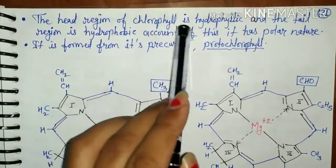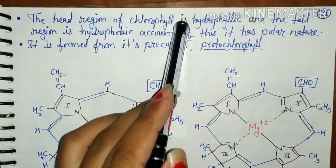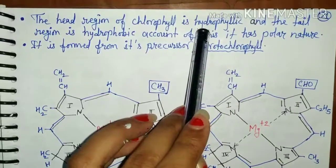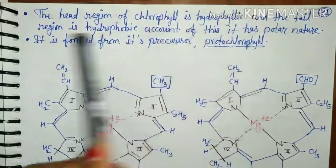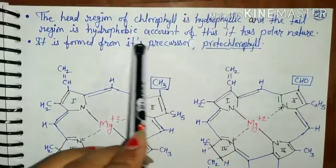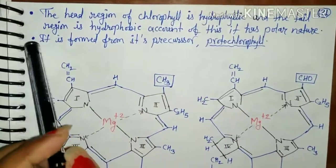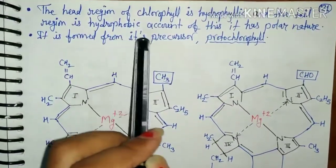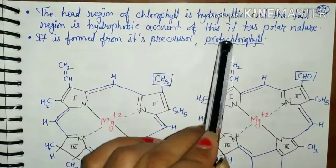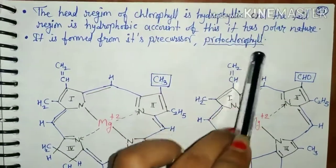The head region of chlorophyll is hydrophilic — meaning the porphyrin part of chlorophyll is water-soluble. The tail region is hydrophobic and water-insoluble. Chlorophyll is formed from its precursor protochlorophyll, so protochlorophyll is the precursor of chlorophyll.